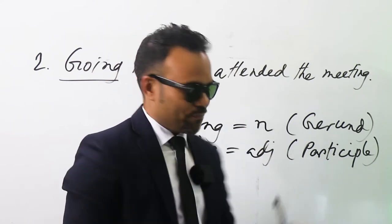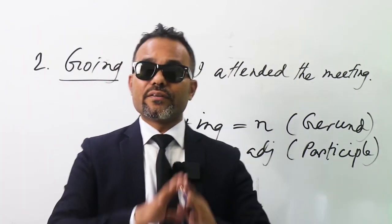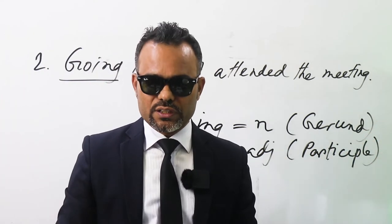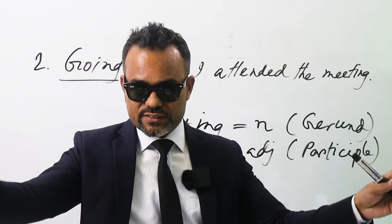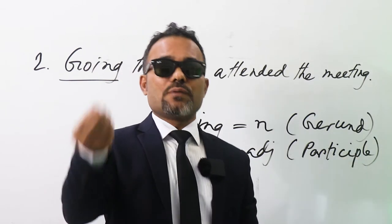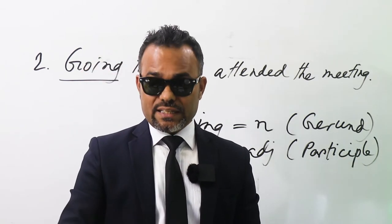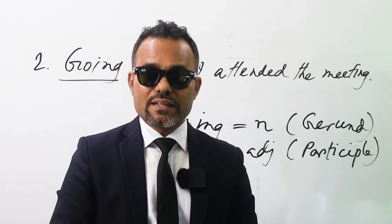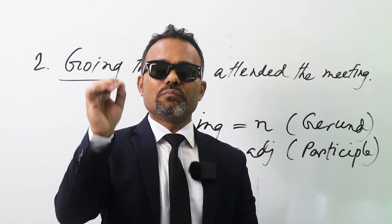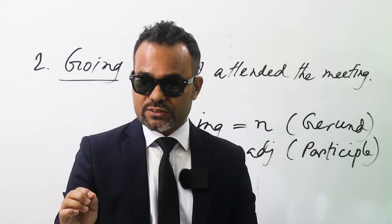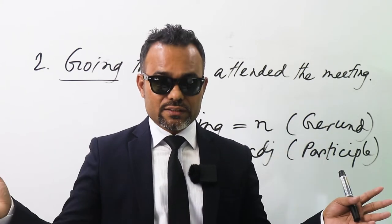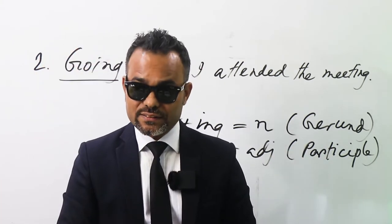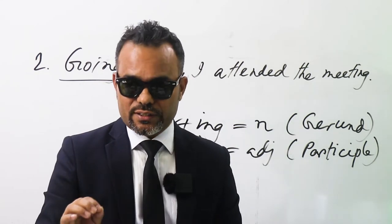Third one we will apply here. That is, if we can remove the word from the sentence and it still gives the meaning, then it will be a participle. But if we can't remove the word from the sentence, then it will be a gerund.